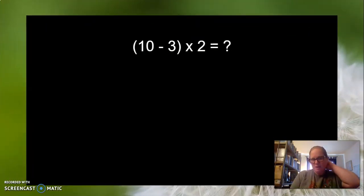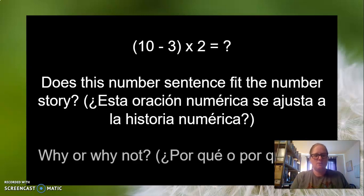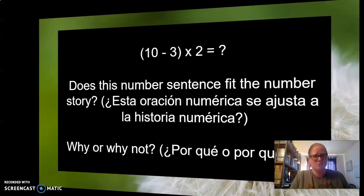Now here we have ten minus three times two, right? Does this number sentence fit the number story? First you have ten items, and you take three away. Then you times everything times two. No. This is not a good way to do it, because you're going to get a totally different answer, and it does not match the story being told. So the reason why is because it doesn't match the story being told.